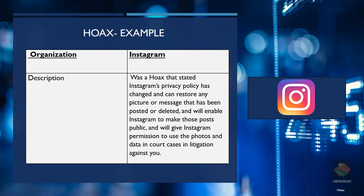A famous example of a hoax was a message that went viral on Instagram, stating that Instagram's privacy policy had changed and could restore any picture or message that had been posted or deleted, and would enable Instagram to make those posts public. It also claimed to give Instagram permission to use those photos and data in court cases or litigation against you, and that in order to avoid it you needed to copy, paste, and forward the message. This was a classic hoax that just wasted people's time. Many famous celebrities such as Julia Roberts and Usher fell for it.